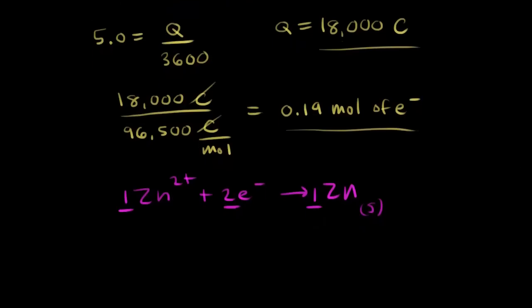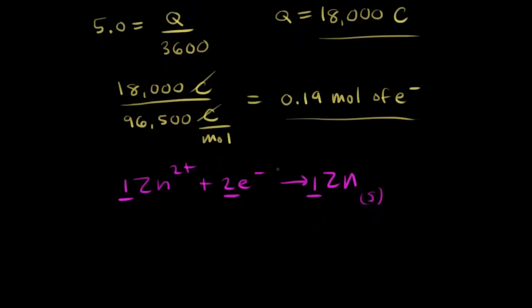So we now have the relationship. We know the mole ratio of electrons to moles of solid zinc. It's a mole ratio of two to one. One mole of zinc is produced for every two moles of electrons that we have.